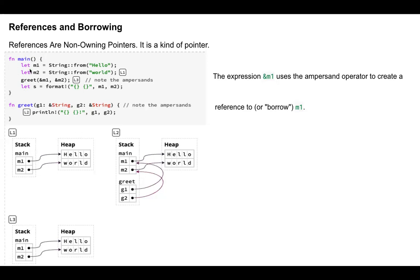So you have a function main. You define a variable m1, and you're initializing it with the string hello. There is m2, you're initializing it with the string world. What you're doing is, you're passing both the variables m1 and m2 to this method greet. Now notice here how we are passing it. You're using an ampersand sign.